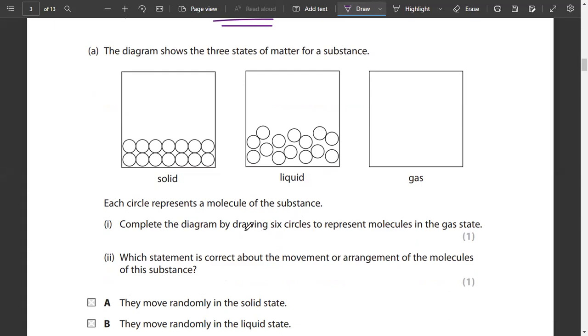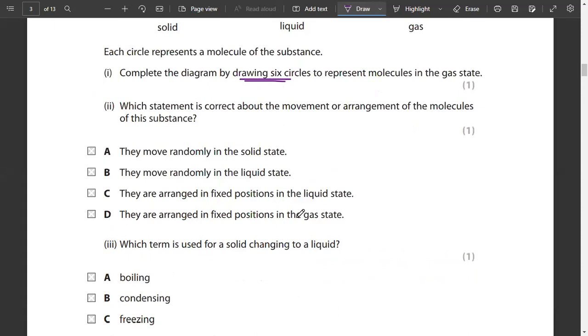Complete the diagram by drawing six circles to represent the molecules in the gas state. For the gas state molecules, we have six circles here which would be far apart from each other. These will be at large distances.